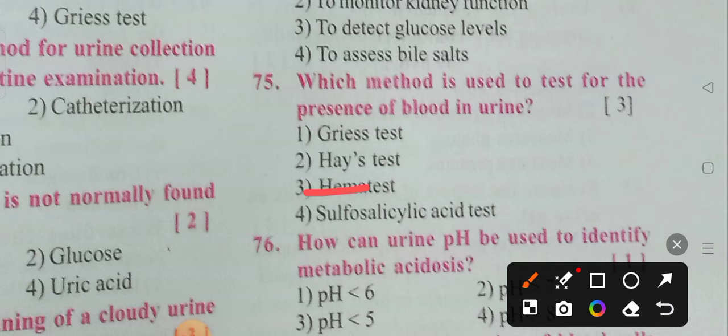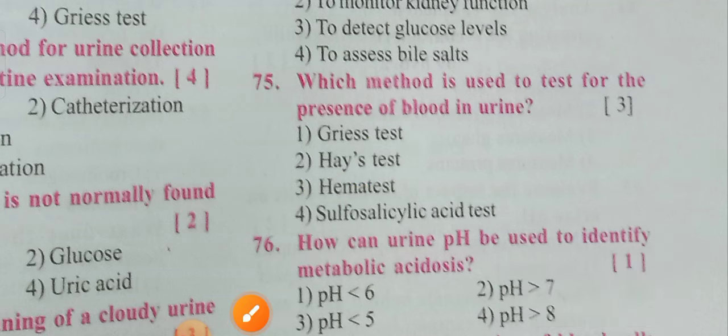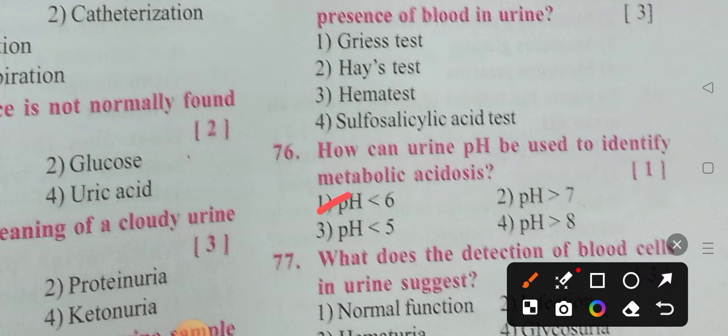How can urine pH be used to identify metabolic acidosis? Options: pH less than 6, pH greater than 7, pH less than 5, pH greater than 8. Option 1 is the correct answer — pH less than 6.